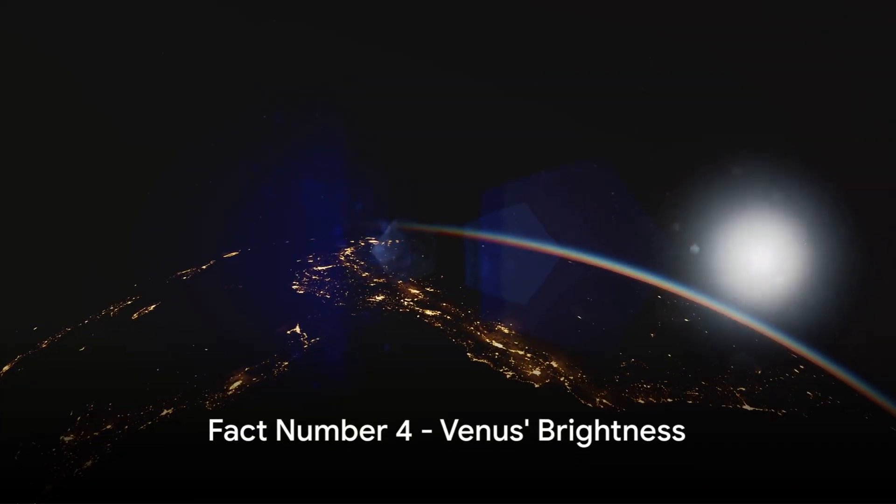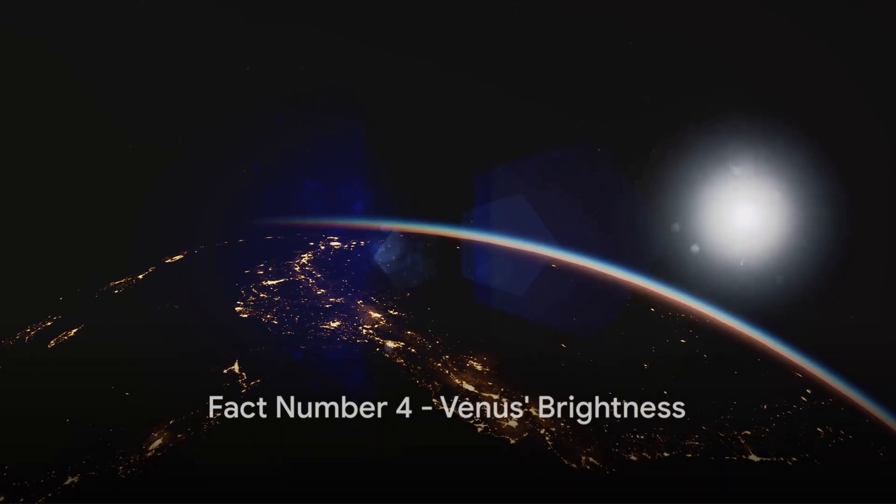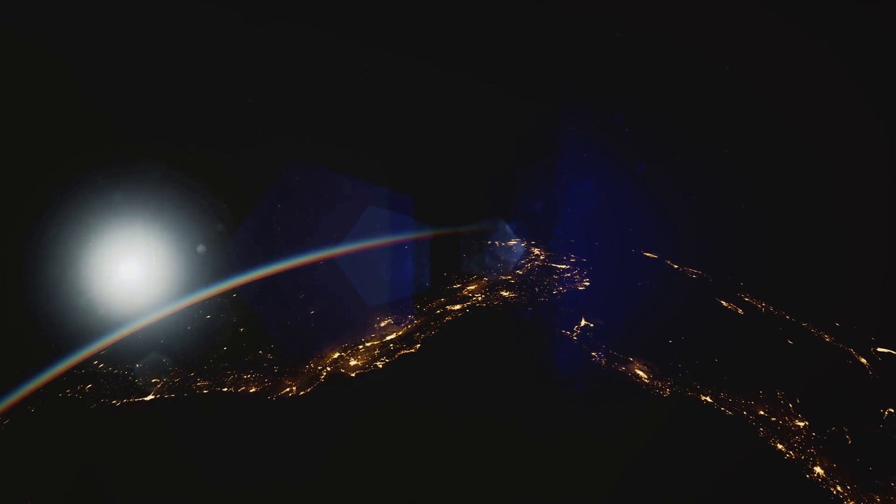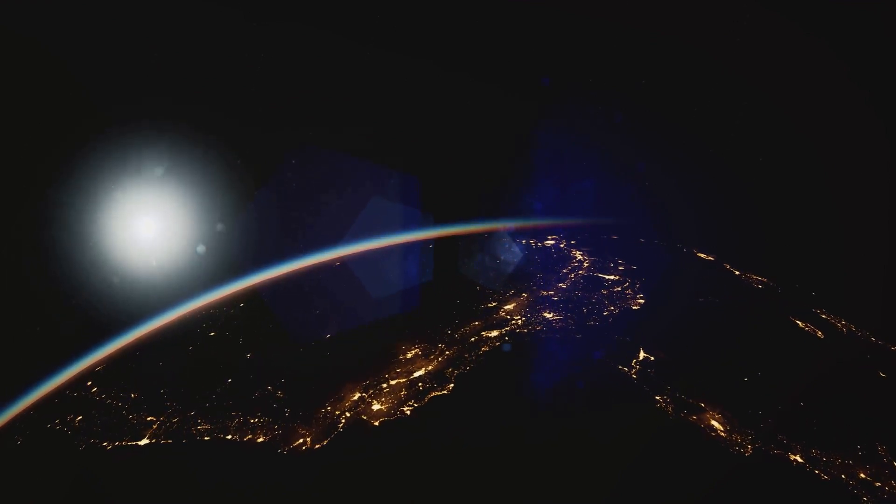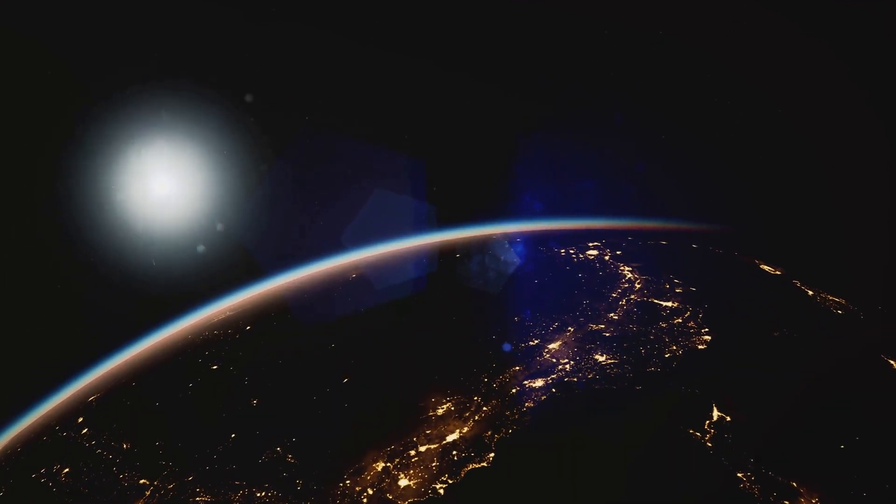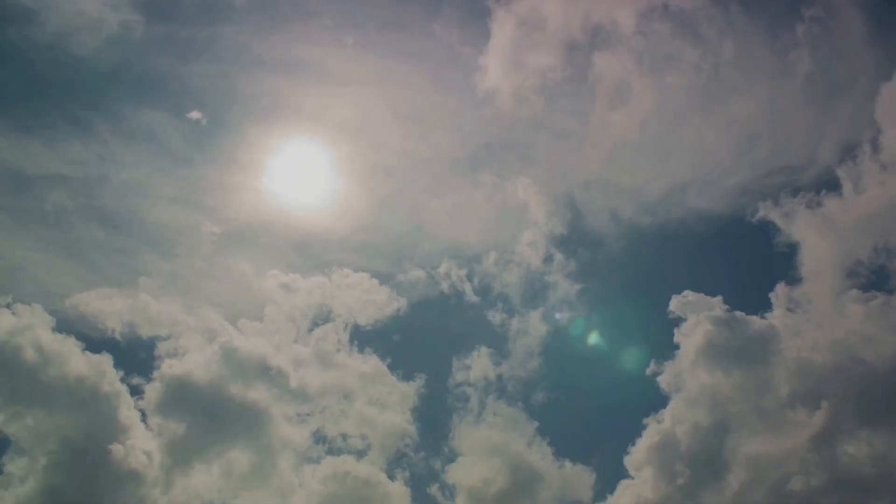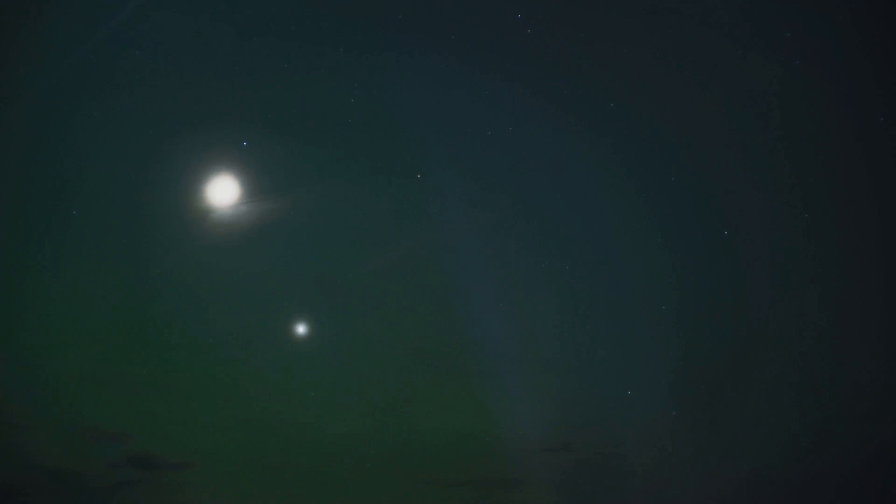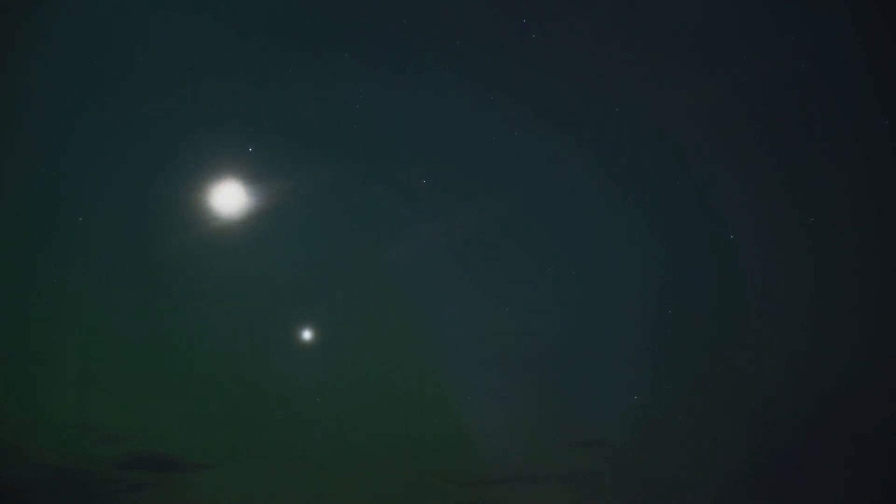Fact number 4. Venus is the third brightest natural object in Earth's sky, but why is that? Well, there are a couple of factors at play. Firstly, Venus is our nearest planetary neighbor, making it appear brighter due to its proximity. Secondly, its thick cloud cover reflects sunlight incredibly well. This combination of closeness and reflectivity make Venus a dazzling sight in our sky.